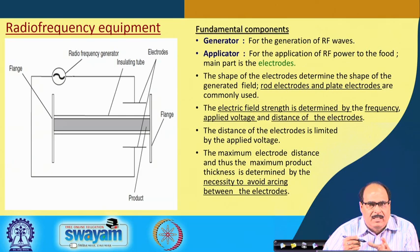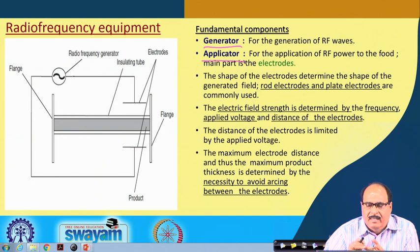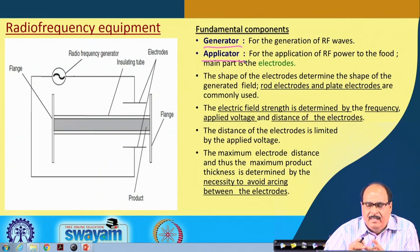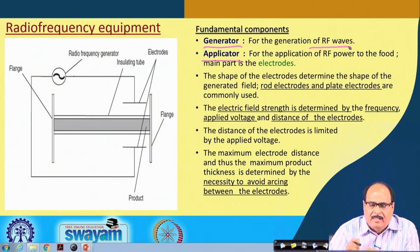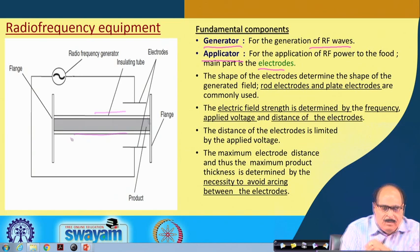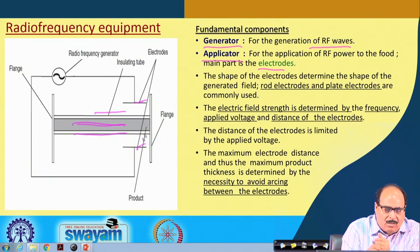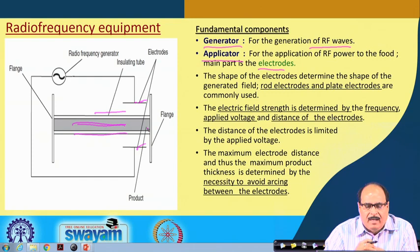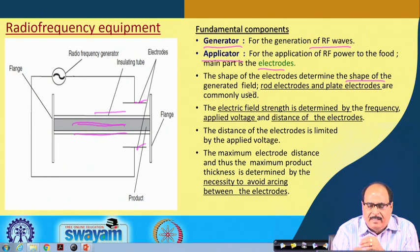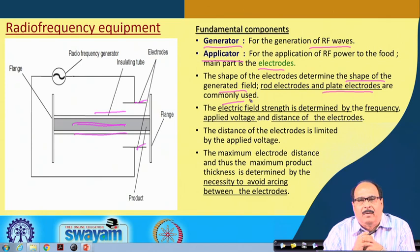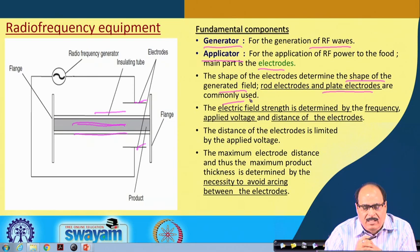Regarding the equipment, the fundamental components of radio frequency heating equipment include a generator and an applicator. The generator is for the generation of radio frequency waves, whereas the applicator is for the application of RF power to the food, and its main part is the electrode. In the figure, you can see the electrodes, an insulating tube where the food material is kept, flanges to hold the electrode, and the radio frequency generator. The radio frequency is generated and passed through the electrodes to the product. The shape of the electrode determines the shape of the generated field. Rod electrodes and plate electrodes are the commonly used types in radio frequency heating.